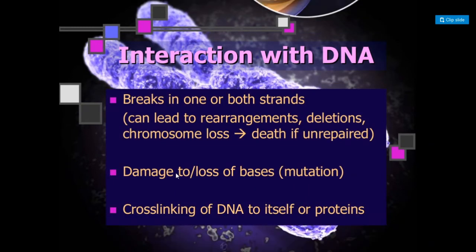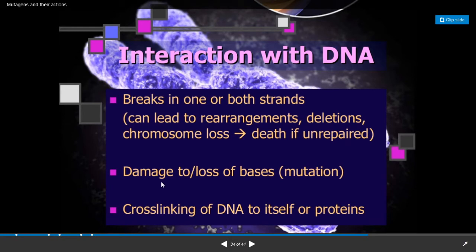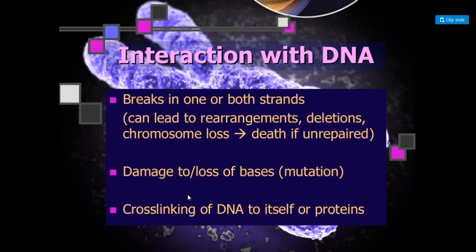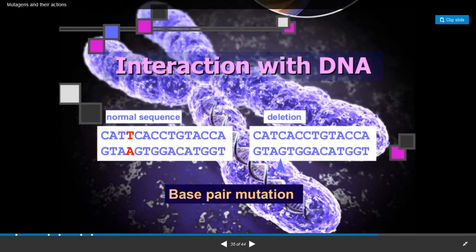These radiations interact with DNA molecules and cause breaking in one or both strands, which can lead to rearrangements, deletions, chromosome loss, and finally cell death if these mutations remain unrepaired. They can also cause damage to or loss of bases — that is, mutation — and they also cause cross-linking of DNA to itself or to proteins.